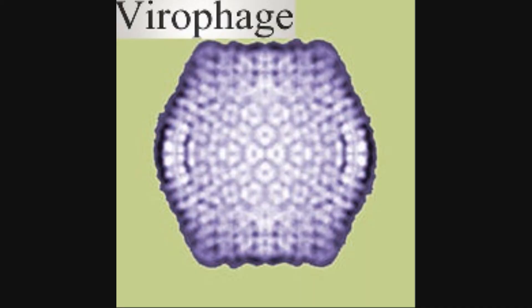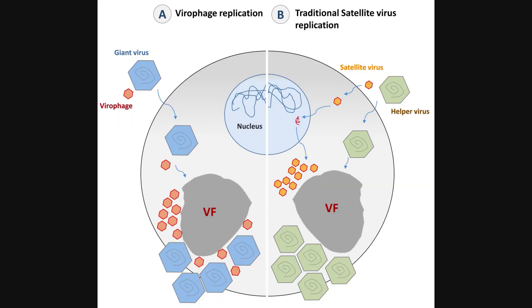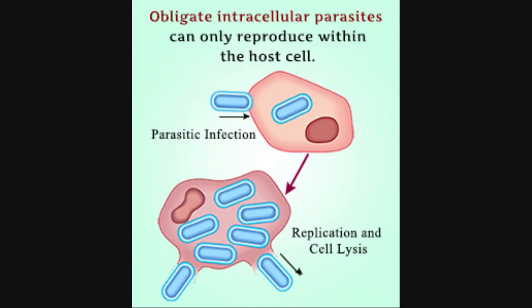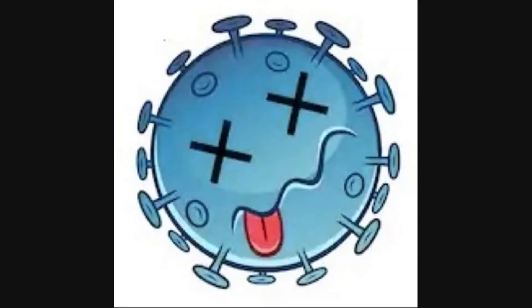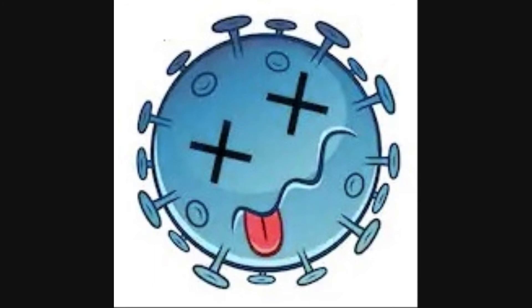There are also some kinds of viruses, called virophages, that co-infect a host cell along with another larger virus. The virophage uses this larger virus in a parasitic fashion to help it replicate, but this leads to the deactivation of the larger giant virus in the process.